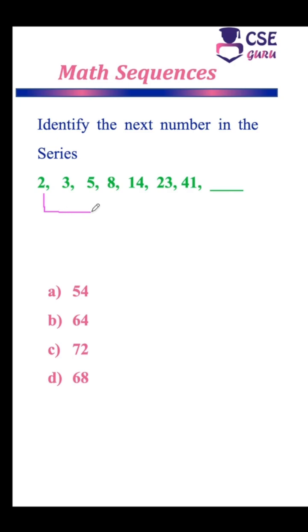The difference between the first and third term is plus 3, and the difference between third and fifth term is plus 9, and the difference between fifth and seventh term is plus 27. And the difference between second and fourth